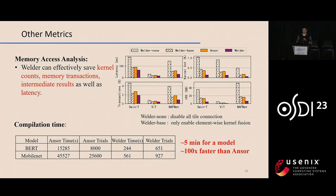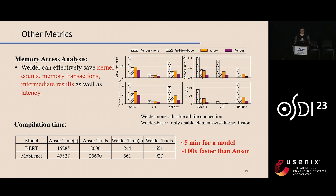In our ablation study, we construct two Welder variants: Welder-None, which disables all tile connection, and Welder-Base, which only enables elementwise kernel fusion. Welder-Base performs similarly to ANSWER because it resembles ANSWER's rule-based fusion. According to the metrics, Welder's TileGraph fusion mechanism helps reduce total kernel count, memory transactions, and intermediate result size. For compilation time, although Welder tunes from scratch like ANSWER, Welder's compilation speed is one to two orders of magnitude faster than ANSWER, because Welder only evaluates a few configurations recommended by the device cost model.